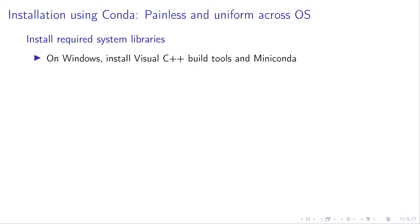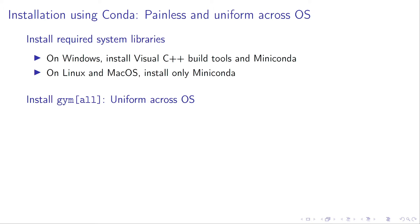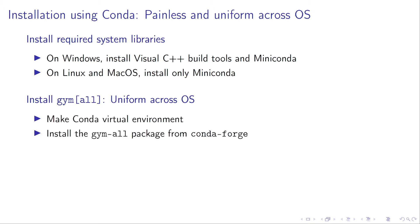And it looks like this. You install the system requirements first. On Windows, this means we need to install the latest version of Visual C++ build tools and Miniconda. On Linux and Mac, we only need Miniconda. And then to install the package, we set up a Conda virtual environment and then let Conda do the heavy lifting for us. I will now take you through these steps.